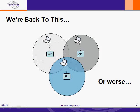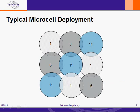In this video I am going to talk about how Extracom's channel blanket technology eliminates co-channel interference and yields vastly improved throughput in comparison to the microcell architecture. We'll focus on the 2.4 GHz band, and in a subsequent video we'll take a closer look at the 5 GHz band.